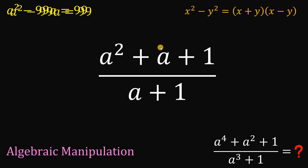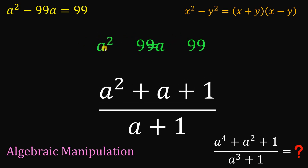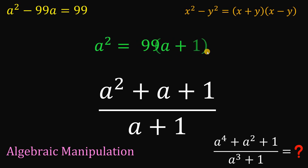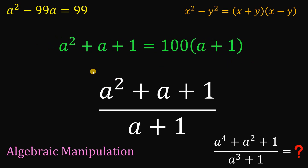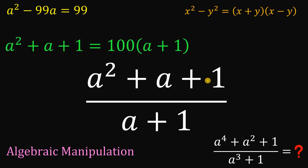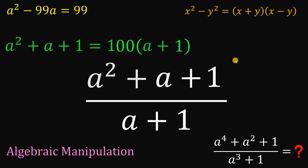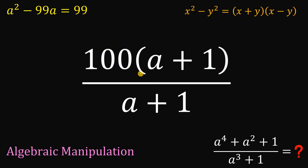Now the given equation comes into play. Adding 99a to both sides gives us a squared equals 99a plus 99. Factoring out 99, we get a squared equals 99 times a plus 1. We want the value of a squared plus a plus 1, so we add a plus 1 to both sides. The right-hand side becomes 100 times a plus 1. So the numerator of our fraction is 100 multiplied by a plus 1, and we can cancel the factor of a plus 1 with the denominator. Our expression is simply equal to 100.